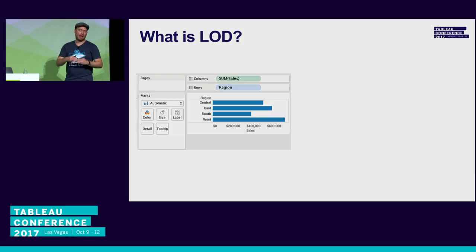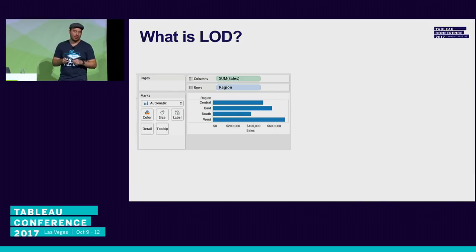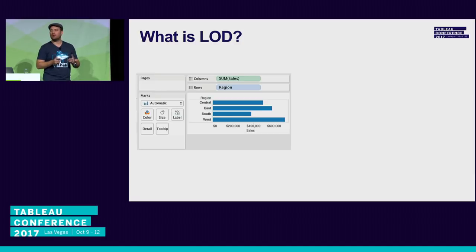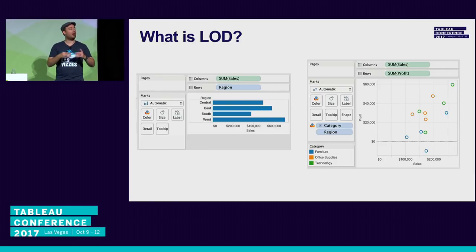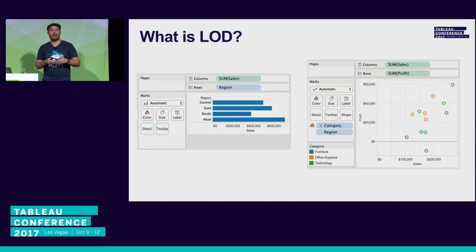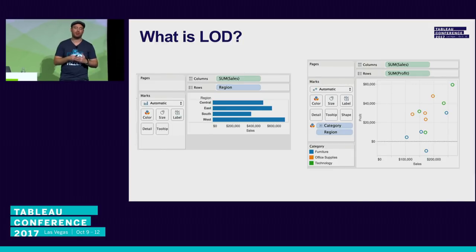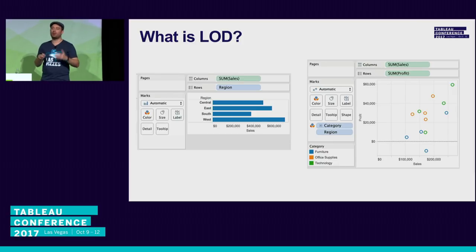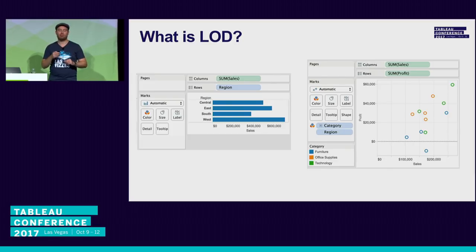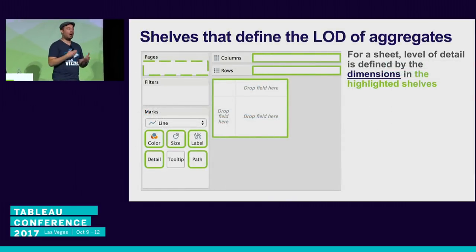Looking at the Superstore database, order ID is not the level of detail of this view because there are multiple order IDs — each order contains multiple items, causing replication. As you analyze your data, you add more levels of aggregation. When you build your first viz, you drag sum of sales and get one mark. The level of detail of the visualization is defined by the dimensions in it — for example, region gives four bars. Adding more dimensions like category and region gives combinations such as furniture east, office supplies west.